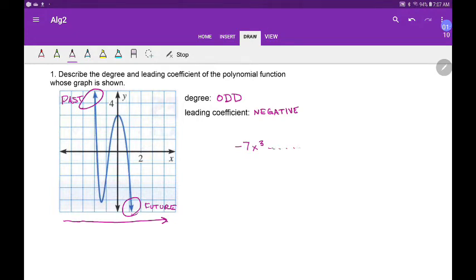And it's got some other things to go with it. I'm not sure what the function is, but anyway, it'd be something like that—a negative number out in front and an odd exponent.